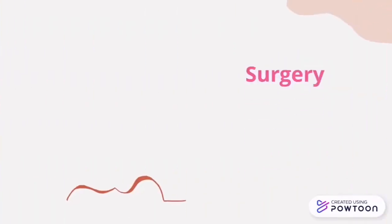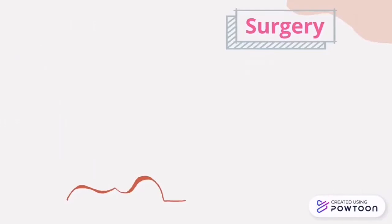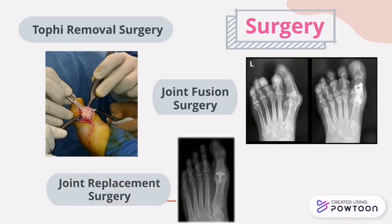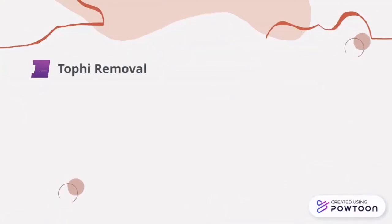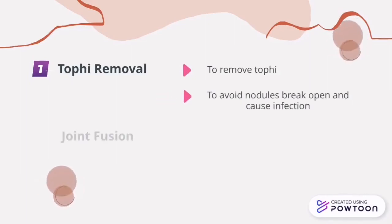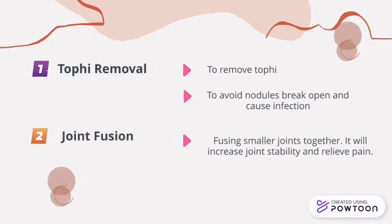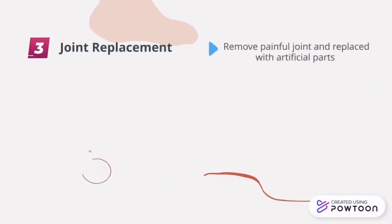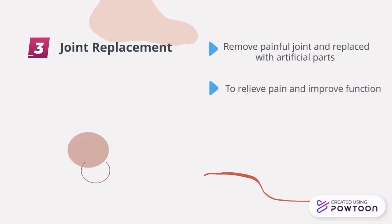There are three surgical treatments for gout. First is tophi removal surgery, to remove tophi and avoid nodule spread and infection. Second is joint fusion surgery, which involves fusing smaller joints together to increase joint stability and relieve pain. Third is joint replacement surgery, to remove the painful joint and replace it with artificial parts in order to relieve pain and improve function.